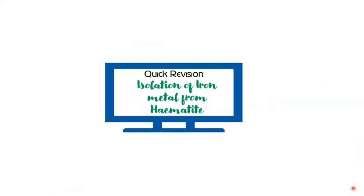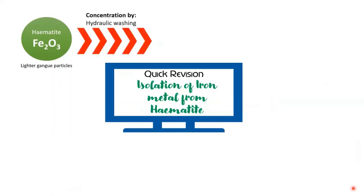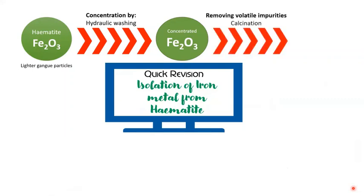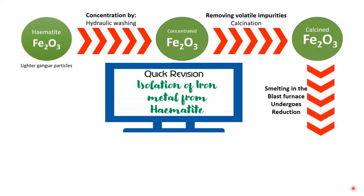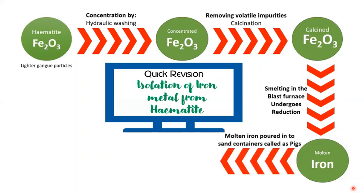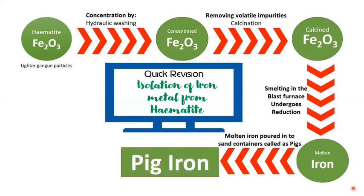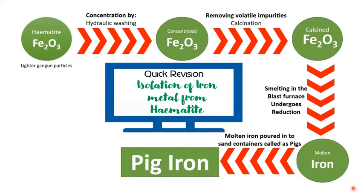Quick revision of iron isolation from hematite: hematite ore (lighter gangue) is concentrated by hydraulic washing; concentrated hematite is calcined to remove volatile impurities, giving calcined Fe₂O₃; this is smelted in a blast furnace (reduction) to produce molten iron; molten iron is poured into pig-shaped sand molds to give pig iron (cast iron); from pig iron, wrought iron or steel is produced.